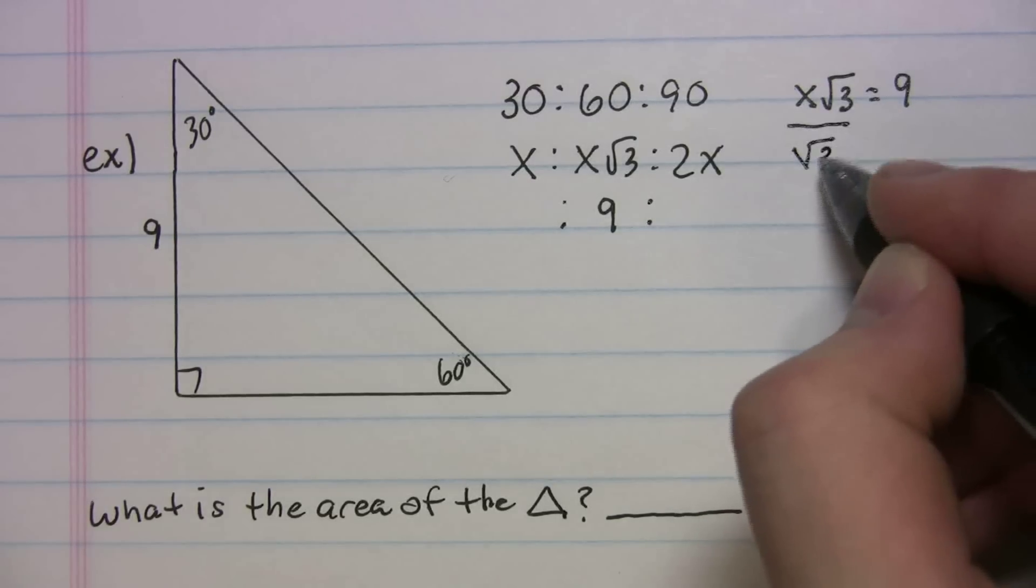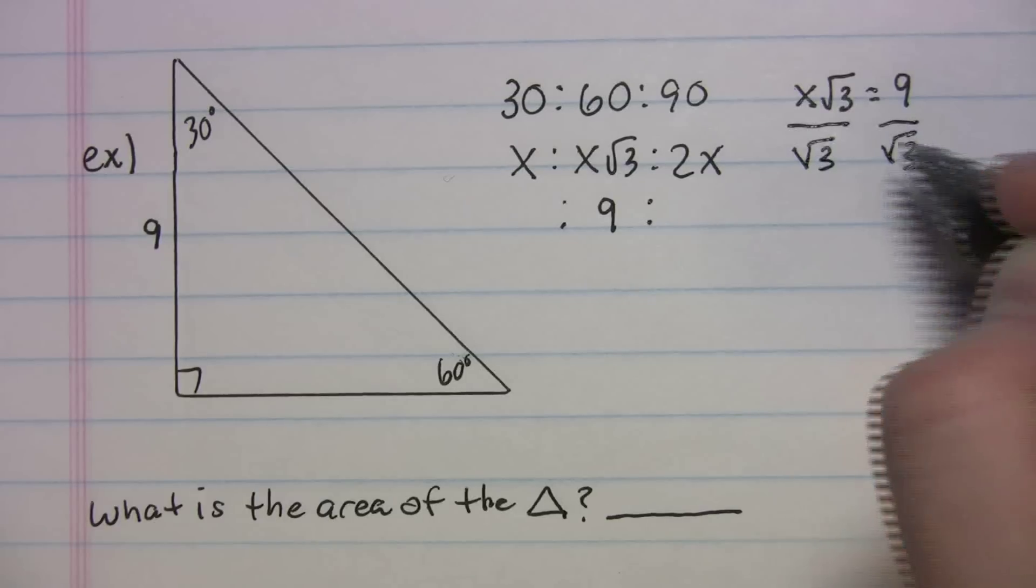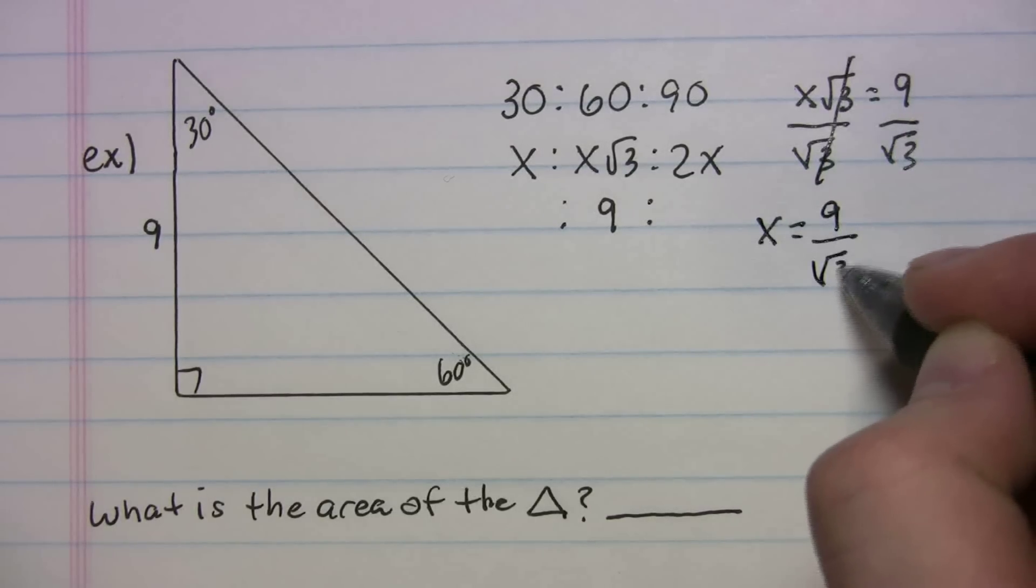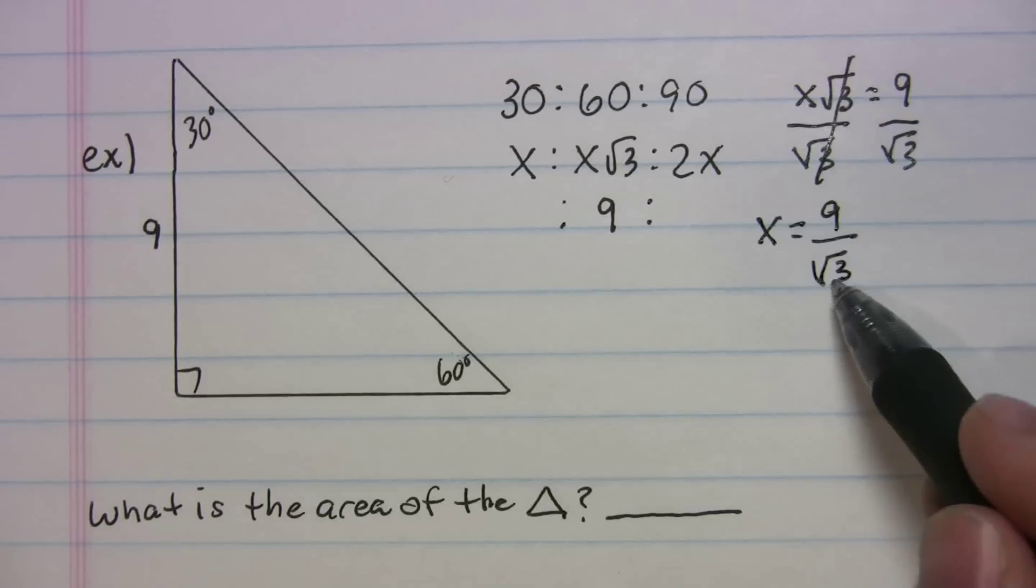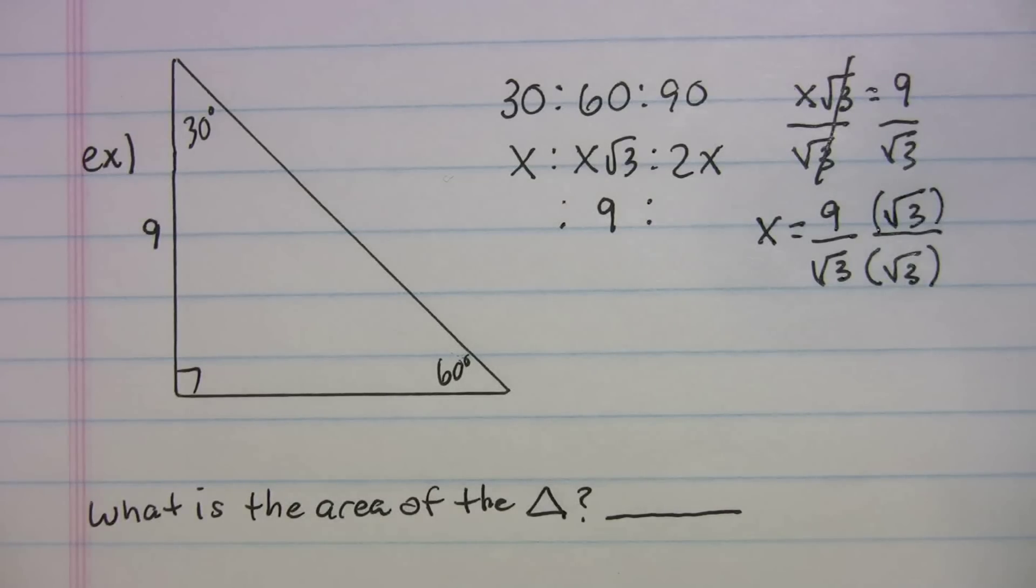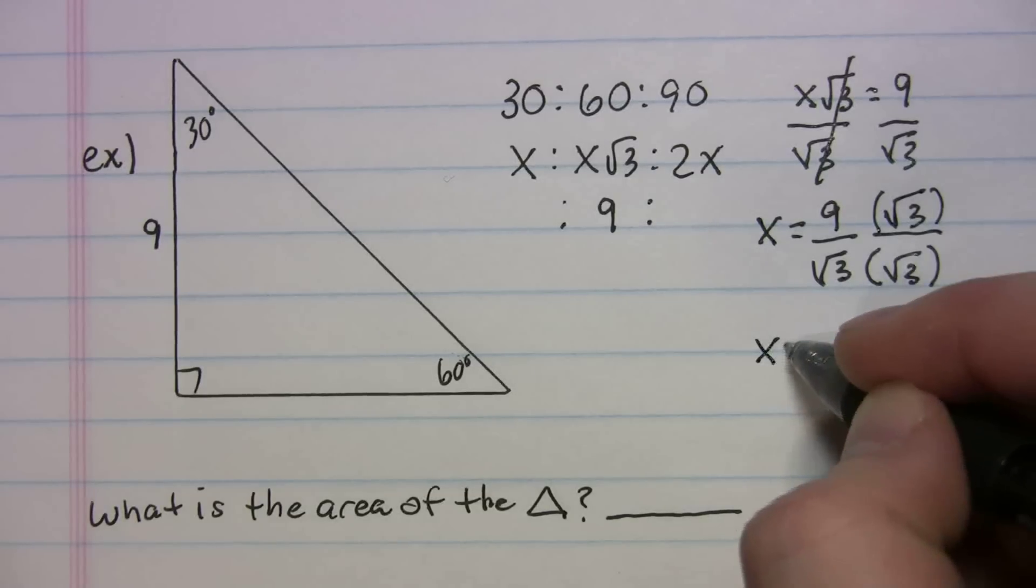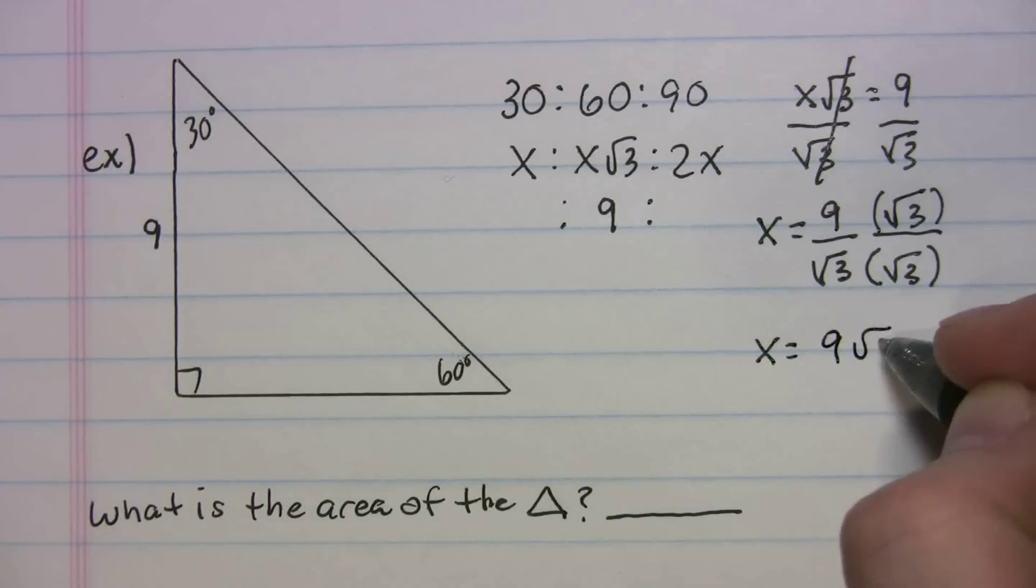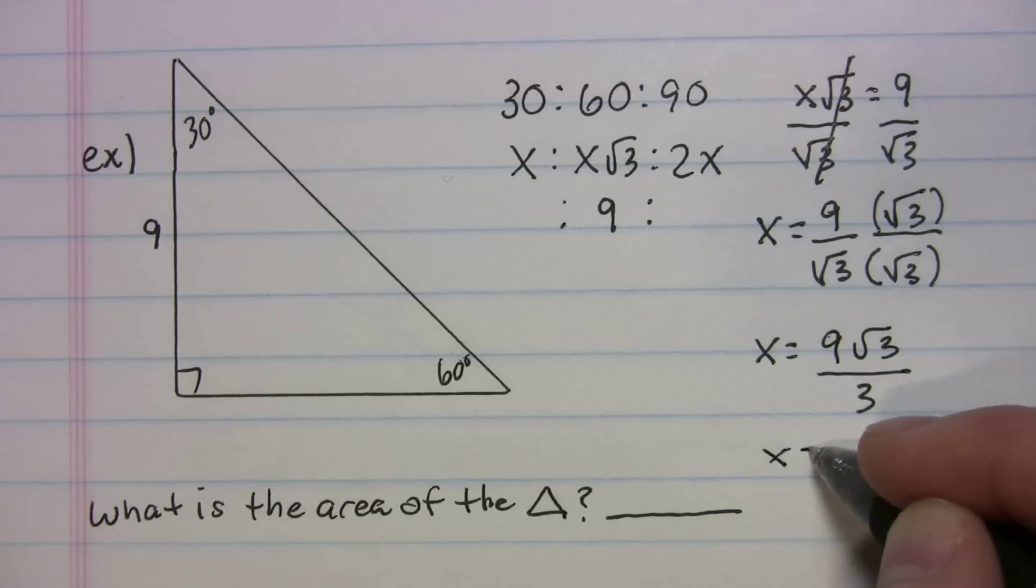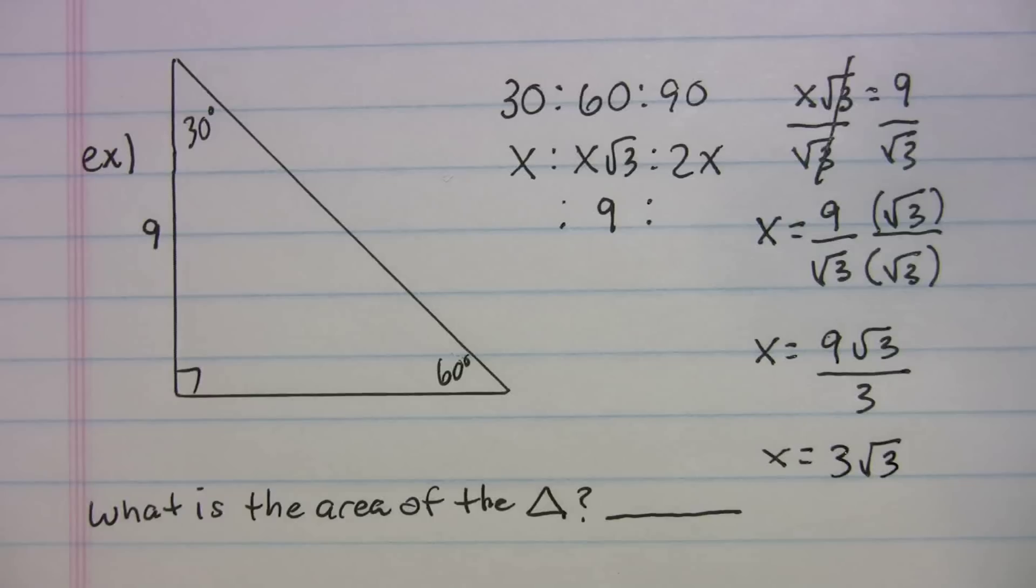That's going to help us solve for x. I'm going to divide both sides by radical 3. So x equals 9 over radical 3. You never want to leave a radical in the denominator. So we're going to rationalize. So we're multiplying the top and bottom by radical 3 over radical 3. And when we multiply across, you get 9 radical 3 over 3. 9 over 3 cancels out. And we just get x equals 3 radical 3.